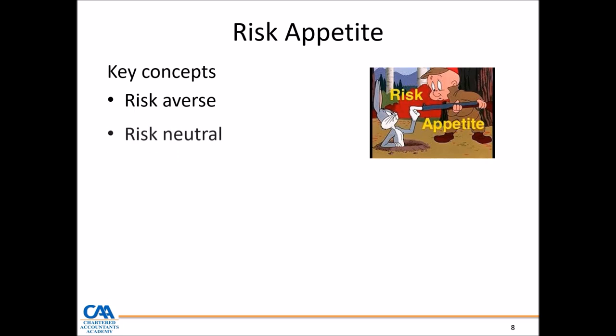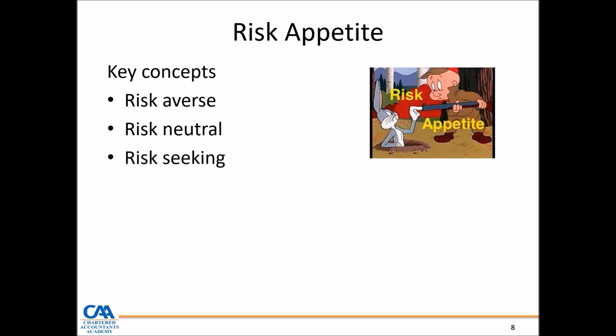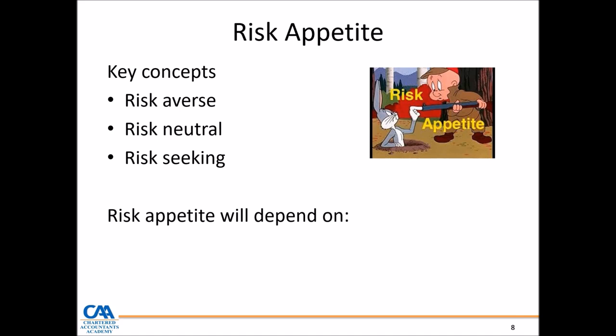Then the next level is someone who is risk-neutral — they are not particularly worried about any risk that may come through from a decision taken. Then there is risk-seeking behavior: these are people who are a bit aggressive, not afraid of risk, telling themselves high risk, high return — they are more open to taking on more risk. In determining whether an entity is going to be risk-averse, risk-neutral or risk-seeking, it will also depend on the risk appetite of that particular business.